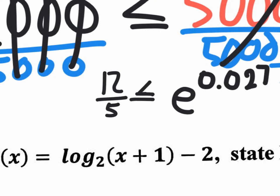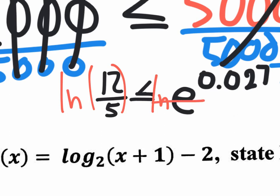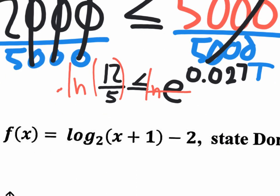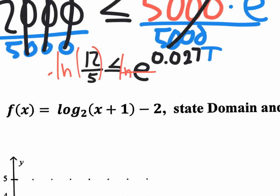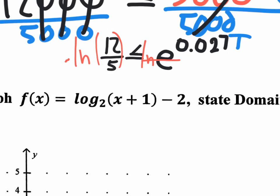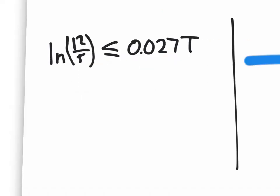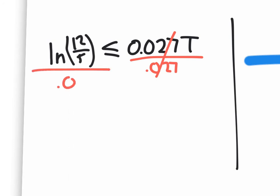Apply ln to both sides. The ln of e cancels out, giving a new inequality: ln(12/5) equals 0.027t. All we need to do now is solve for t by dividing by 0.027 — that cancels it out. On the calculator: hit the LN button, it opens parentheses; type 12 divided by 5, close parentheses, hit equal to get the decimal; then divide by 0.027 and hit equal.